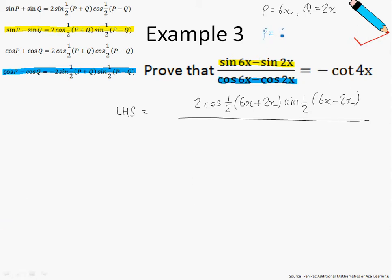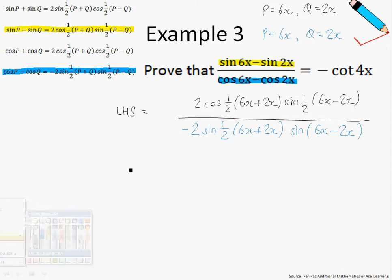In this case, my P is also 6x and my Q is also 2x. So using the factor formula, this will give me negative 2 sine half of 6x plus 2x, sine 6x minus 2x. So let us just try to simplify as much as we can.